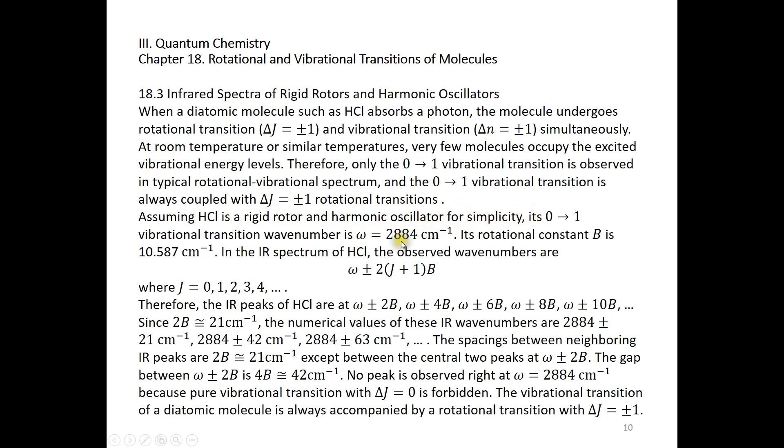Now let's assume HCl is a rigid rotor and harmonic oscillator for simplicity. Its 0 to 1 vibrational transition wave number is 2884 cm⁻¹. Its rotational constant B is 10.59 cm⁻¹. In the infrared spectrum of HCl, the observed wave numbers are omega plus minus 2(J+1)B.